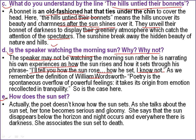Question E: How does the sun set? The poet doesn't clearly know how the sun sets — she appears ambiguous and doubtful as she talks about the sunset. Her tone becomes serious and gloomy. She says the sun disappears below the horizon, night occurs, and everywhere there is darkness. She associates the sunset with death.